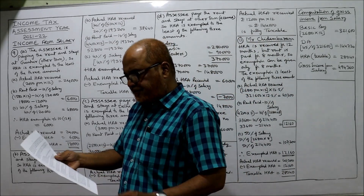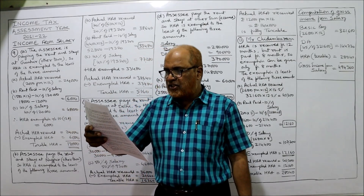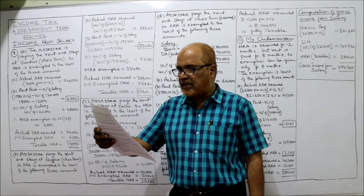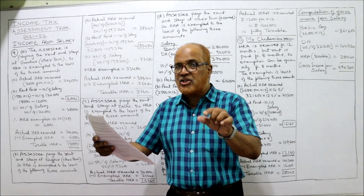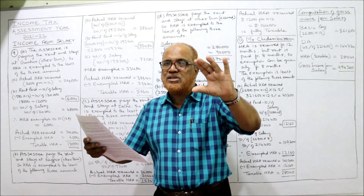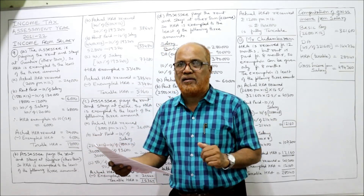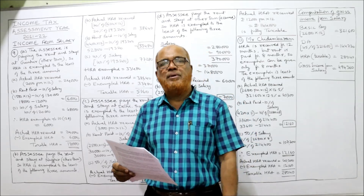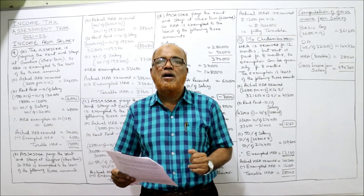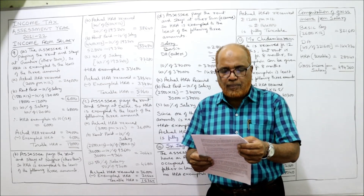Problem number 9: Find out the amount of house rent allowance which shall be included in the income under the head salary in each of the following cases. It is asking how much HRA is taxable — not exempted. First we calculate how much is exempted, then how much is taxable to be included in salary income. Four cases are given: A, B, C, D.